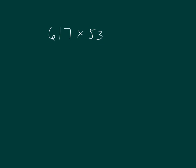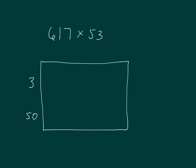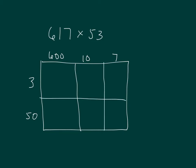Now we have a three-digit by a two-digit multiplication. Our area model looks very much the same. We can break apart 617 into 600, 10, and 7. Then: 600 times 3 is 1,800; 3 times 10 is 30; and 3 times 7 is 21.